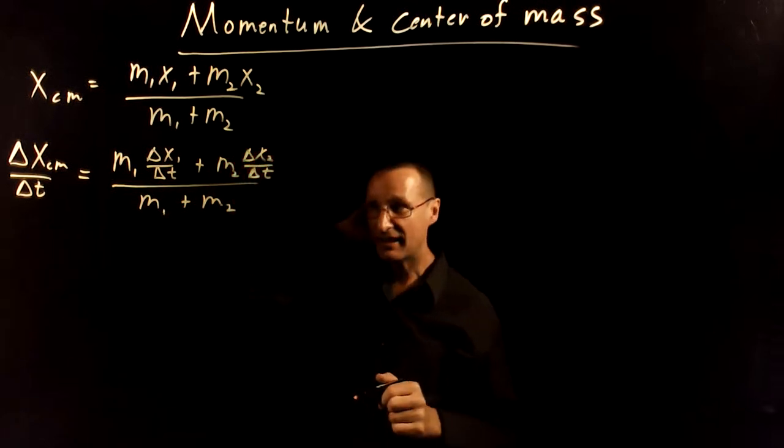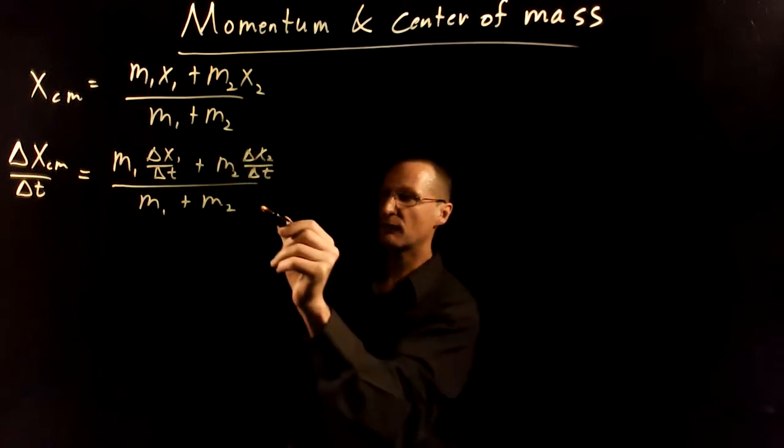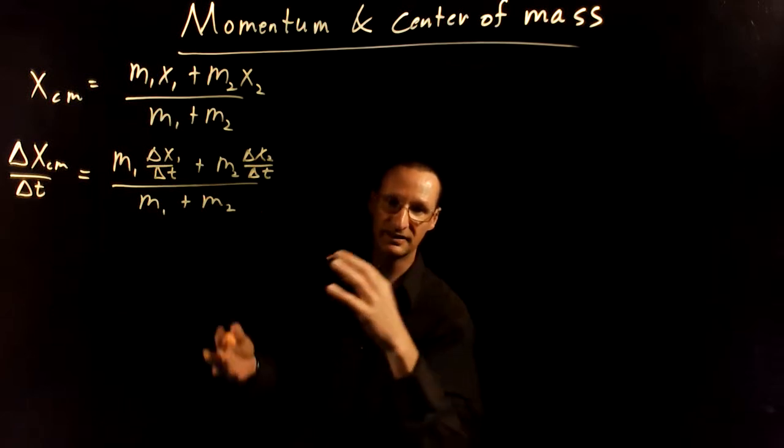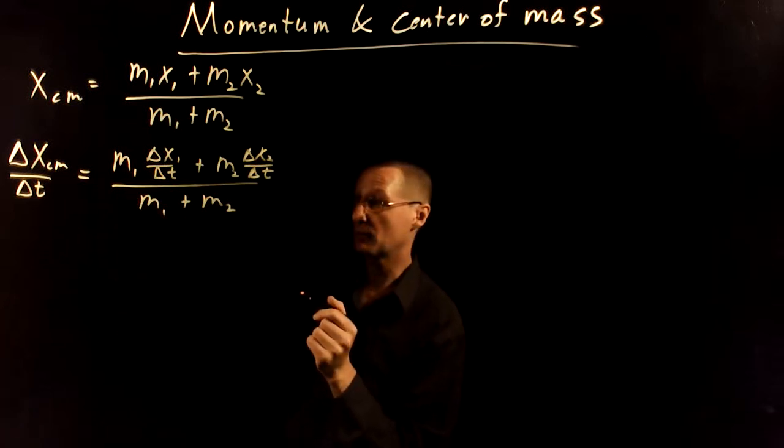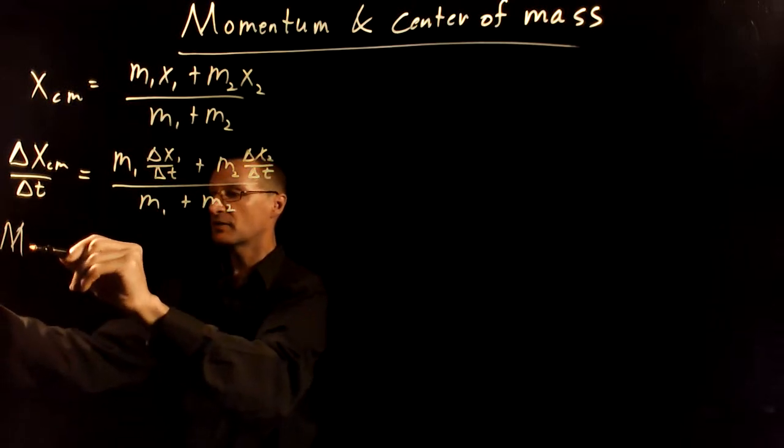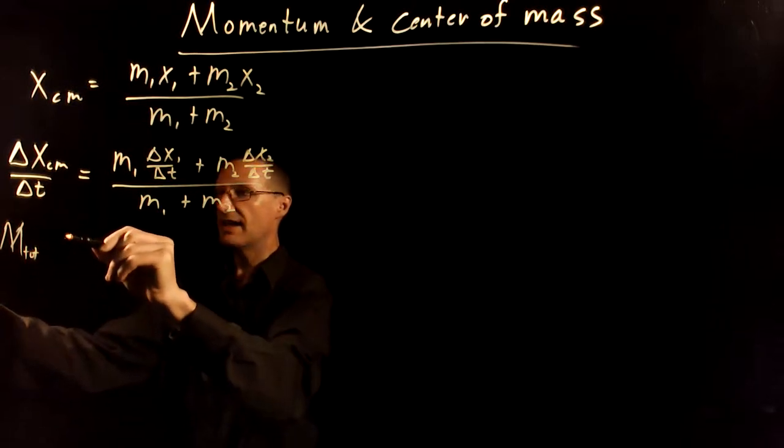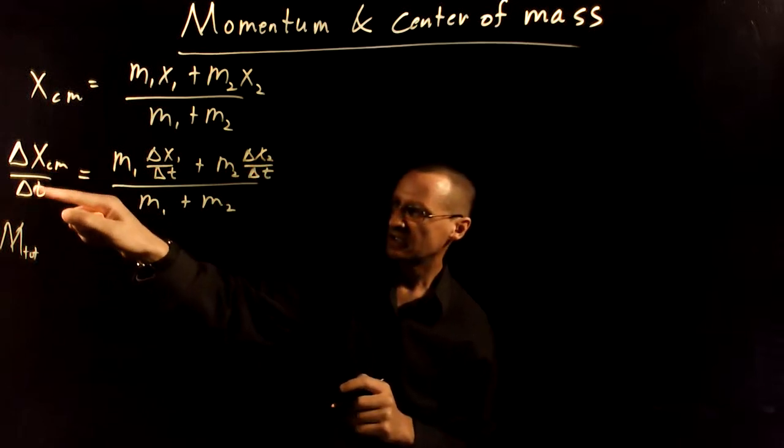Alright, so now that looks pretty useful. Now remember this is the m1 plus m2, that's just the total mass of the system. Let me multiply that by both sides to move it over to the other side. So that's going to be the total mass, and then what does this mean here?